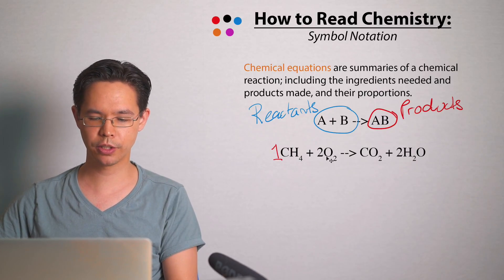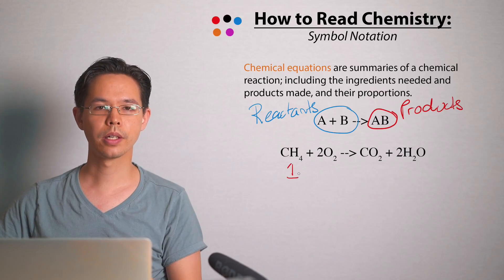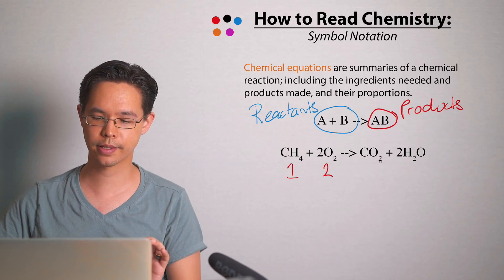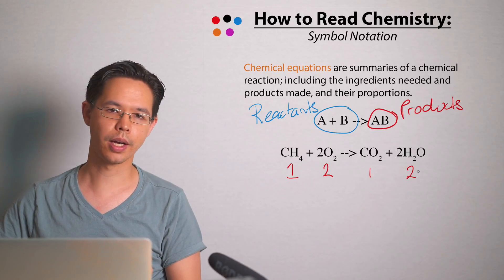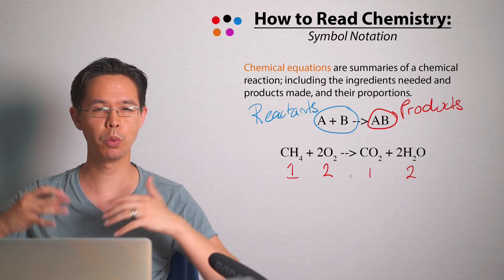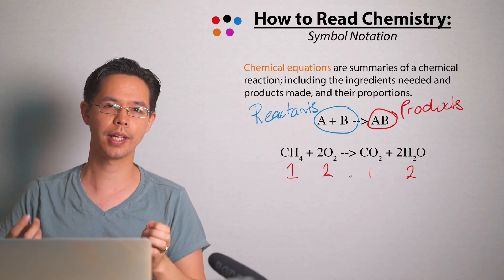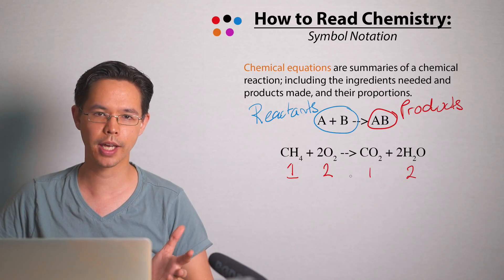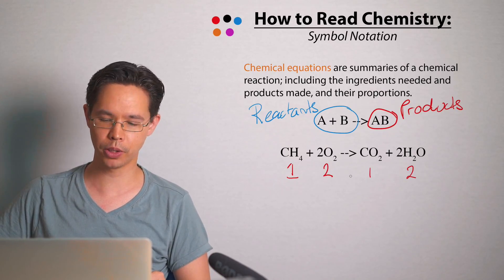Can you see how again this number one is invisible? How many CH4 stuffs do I need? Well there's actually a number one in front of it but it's invisible. So what's the relative proportions here? Well it's one part methane gas, two parts oxygen gas, one part CO2 gas and two parts water vapor gas. That tells you the ratios.